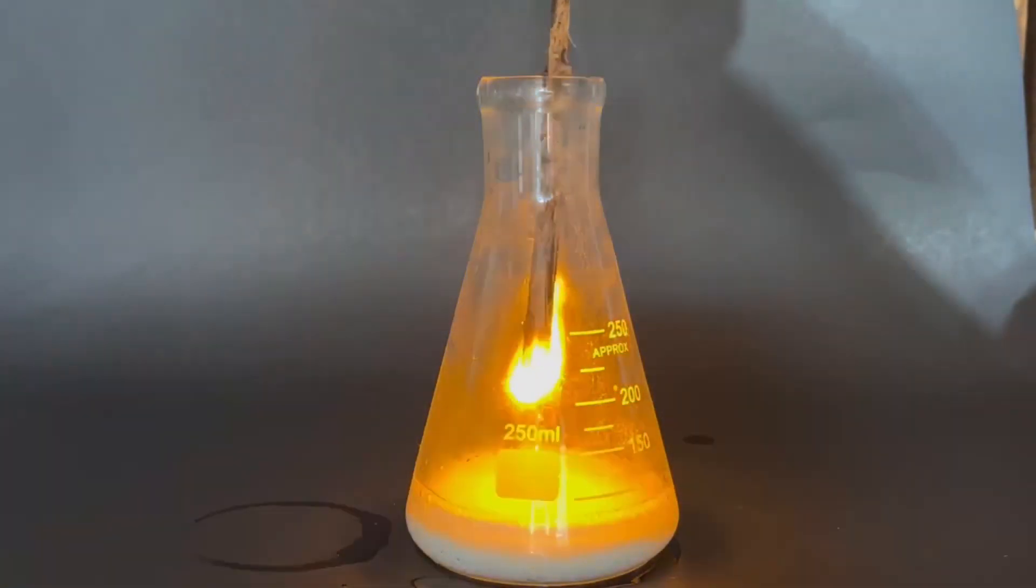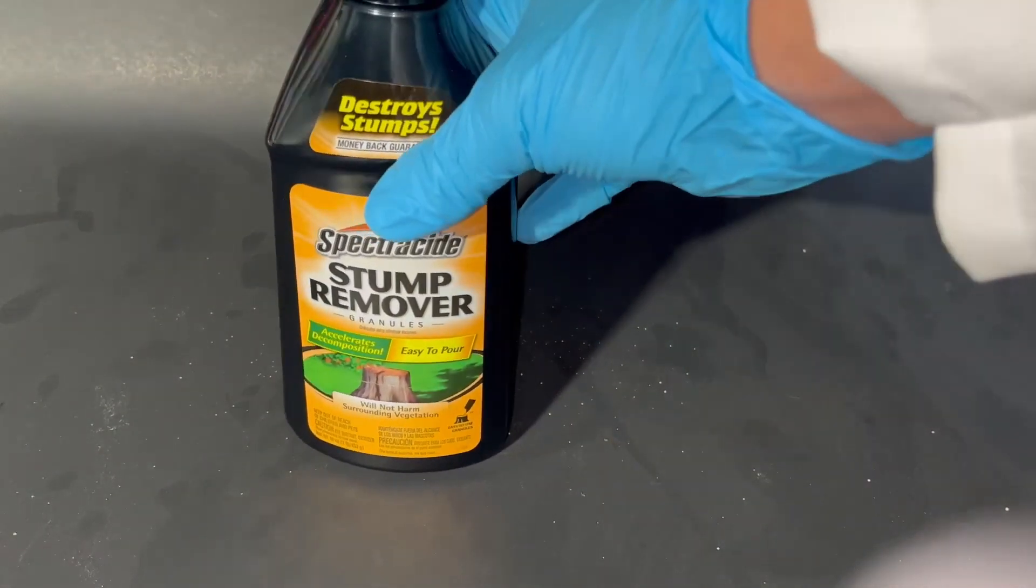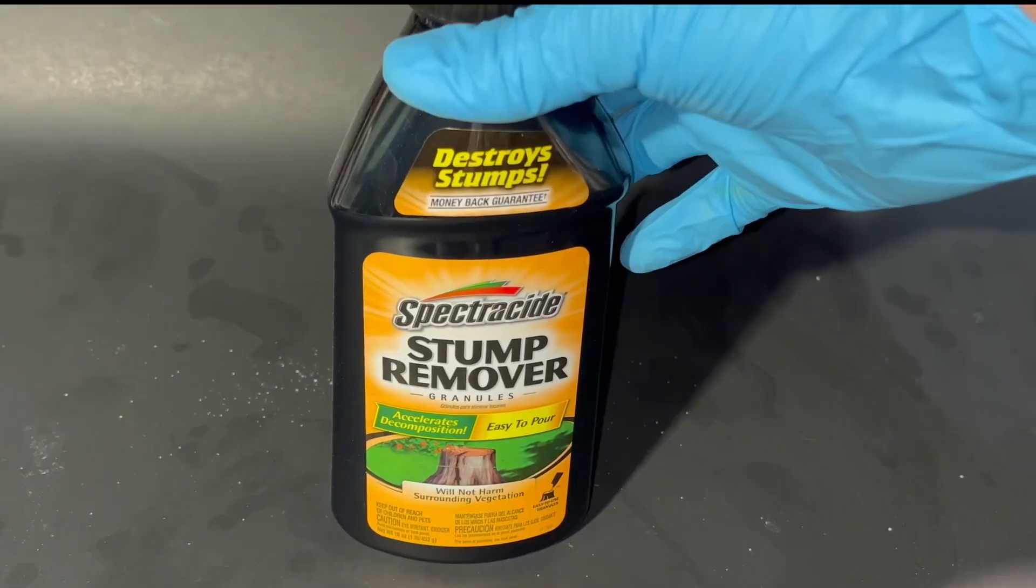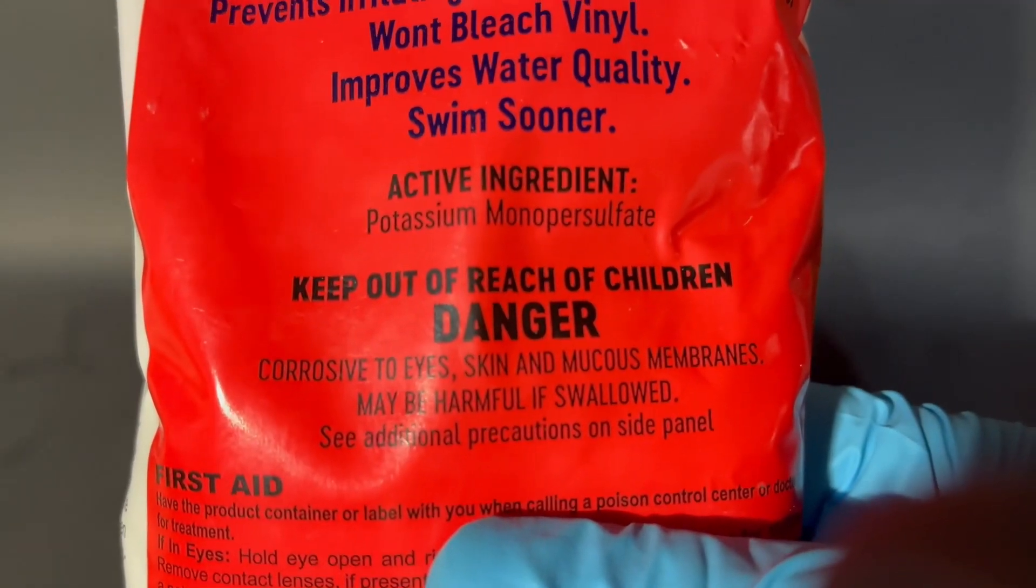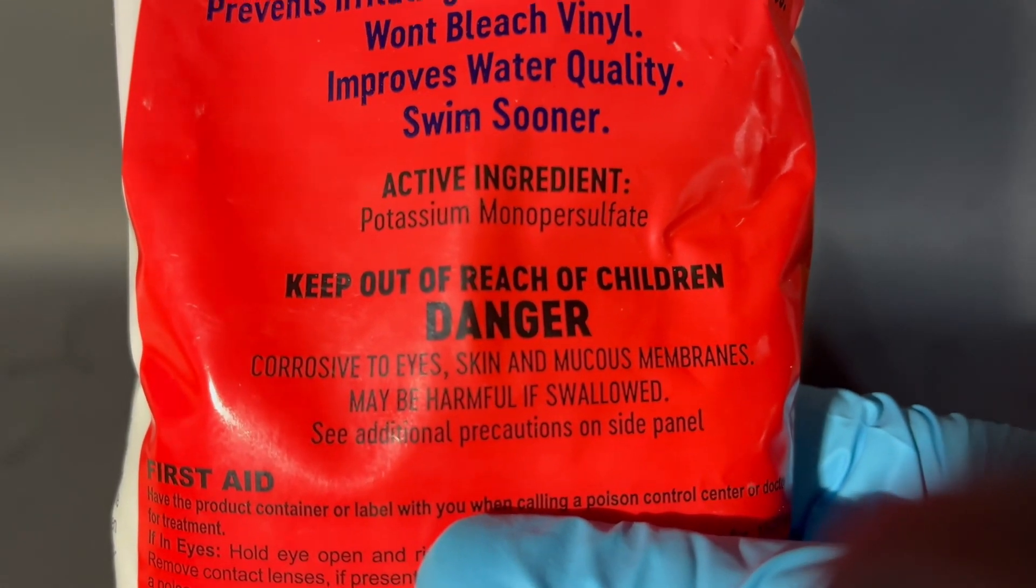But what oxidizer for your flash powder should you use? Well, I see a lot of hobby chemists out there use potassium nitrate, which you can find as a stump remover in Lowe's. But that isn't strong enough for me, so I'll go with potassium persulfate, pool shock.